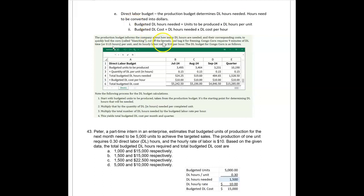Hours need to be converted into dollars. The budgeted direct labor hours needed equals the units to be produced from the production budget times the direct labor hours per unit. And then the budgeted direct labor cost is the direct labor hours needed times the direct labor cost per unit.